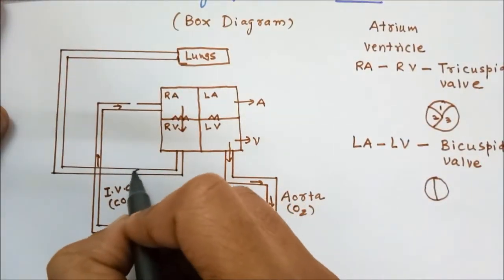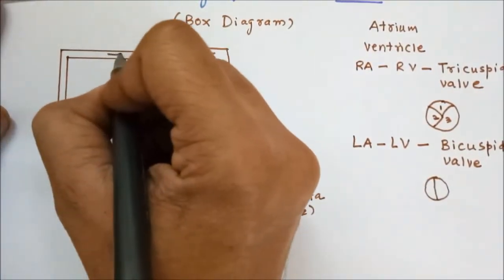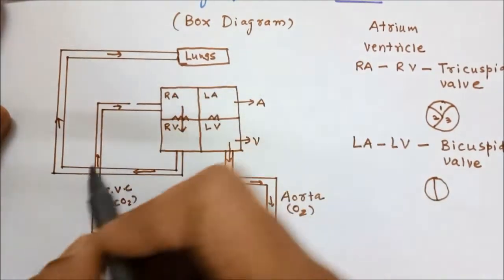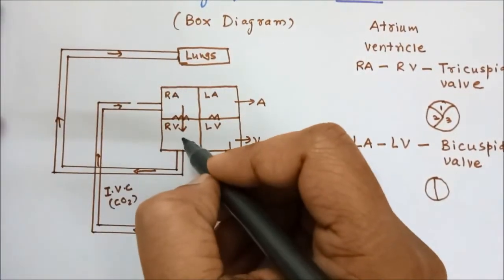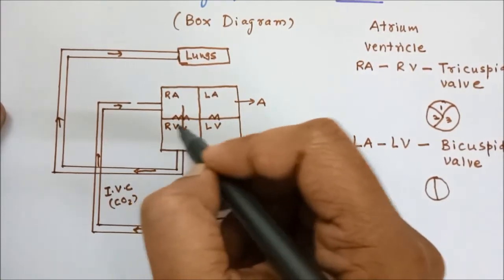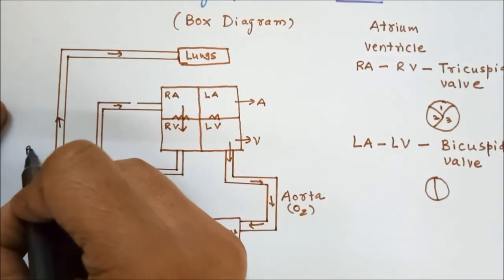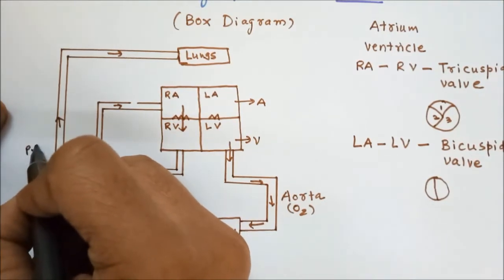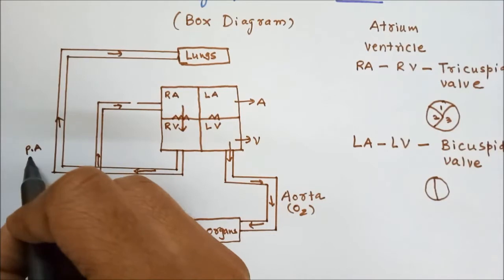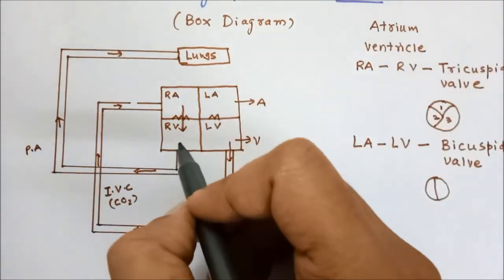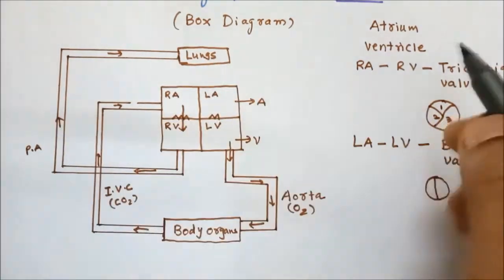This deoxygenated blood goes to the lungs via the pulmonary artery, which carries deoxygenated blood from the right ventricle to the lungs.